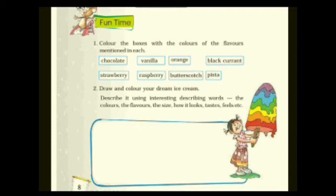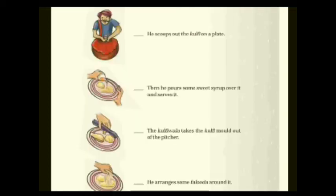Next activity: draw and color your dream ice cream — which we have already done in the previous class. Describe it using interesting describing words: the color, the flavor, the size, how it looks, how it tastes, how it feels, etc. You have to describe the ice cream — how it looks, what flavor you like, what kind of experience you have when you eat it — and write it in the given box.